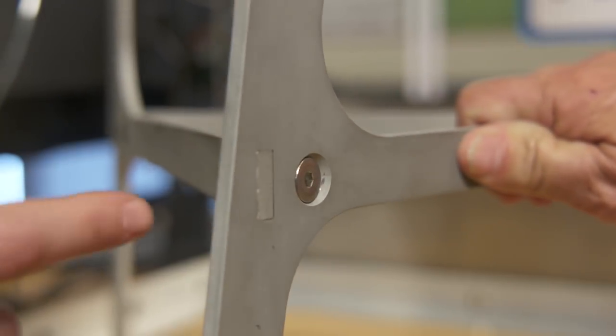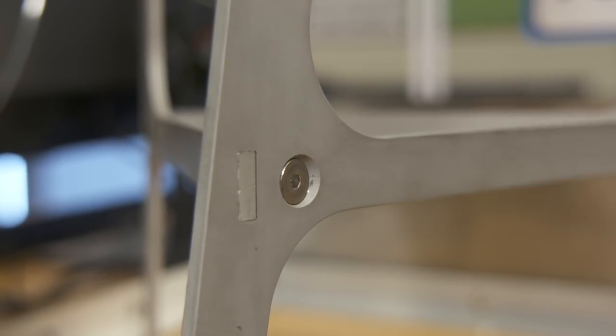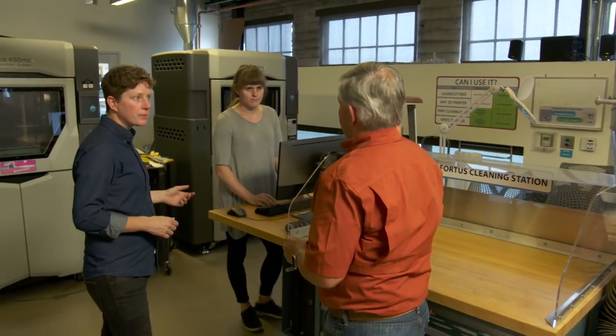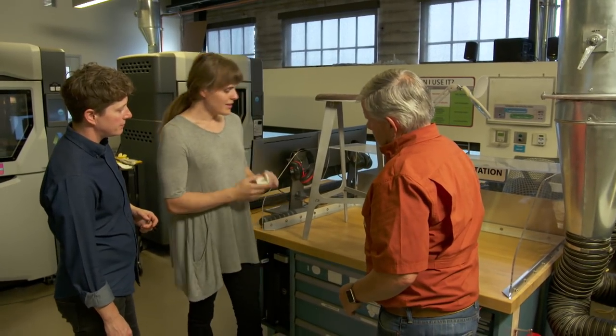Same with those countersinks. And so when we're looking at these joints, the quickest way for us to mock those up without wasting real materials is to 3D print those. Use a printer. Wow. Yeah. So Gabby can show us how this has worked in this stool.